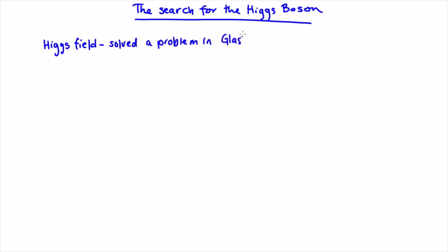Glashow, Salam, and Weinberg used Higgs' ideas to generate massive W and Z bosons in their electroweak theory, which made everyone reasonably happy.